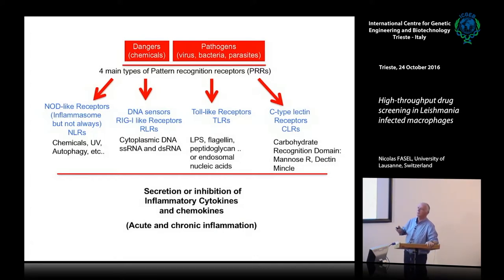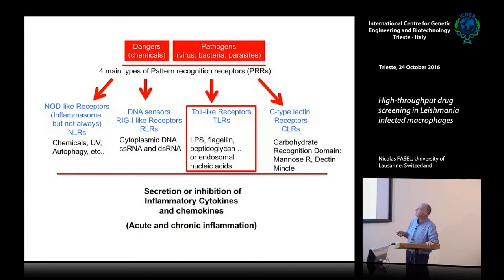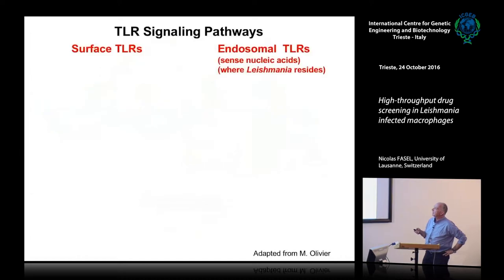So you have some aspects which are important — it's how to resolve the inflammation. My talk will mainly deal with toll-like receptors, and in toll-like receptors you have two types: surface toll-like receptors and endosomal TLRs.